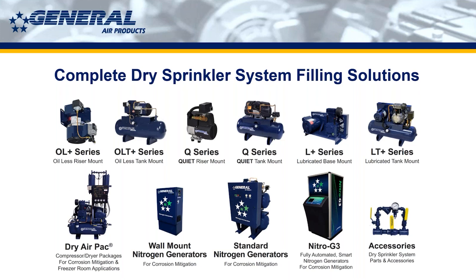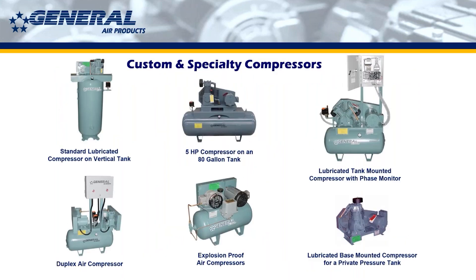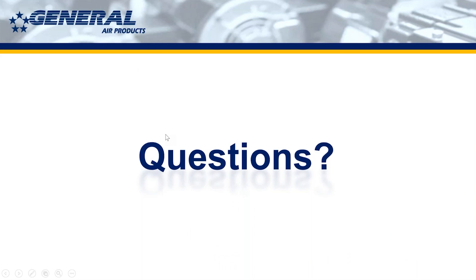This slide shows every variety that General Air makes and that's available in the industry: oilless, tank-mounted, quiet, lubricated, dry air generators, nitrogen generators, and air maintenance devices. A lot of people don't realize how many different types there are and that there are different applications for each one — it's not just a square on a drawing that says 'air compressor.' Additionally, we do a lot of custom and specialty air compressors, so if your job doesn't fit a standard product line, it's not uncommon for us to build something custom.